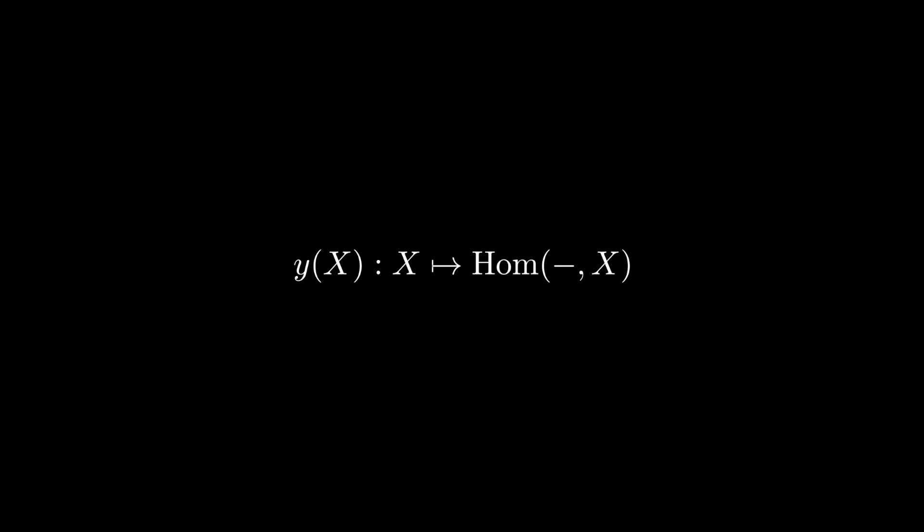X and Hom(−,X), the functor, are certainly not isomorphic, as they may not even lie in the same category. Indeed, in our previous example, X was a topological space, and its Hom set, you know, the set of all morphisms into it, was just that, a set in the category of sets. But what we can say is that they carry the same information in the following sense.